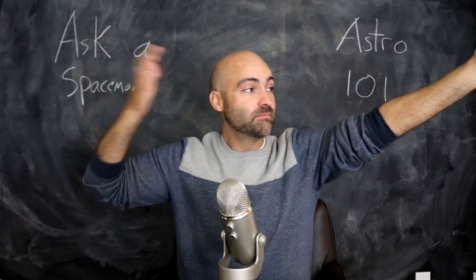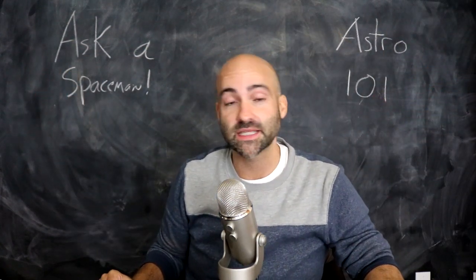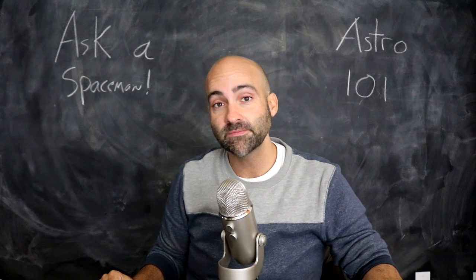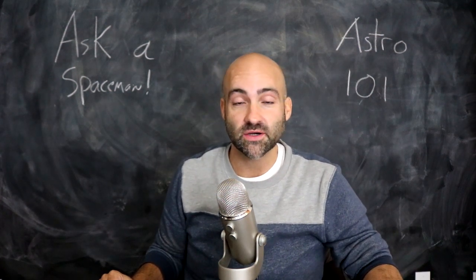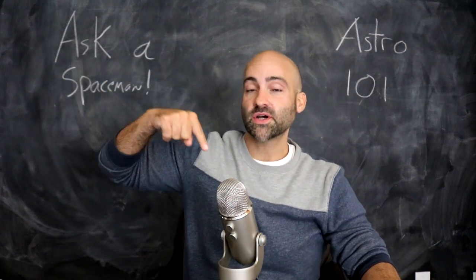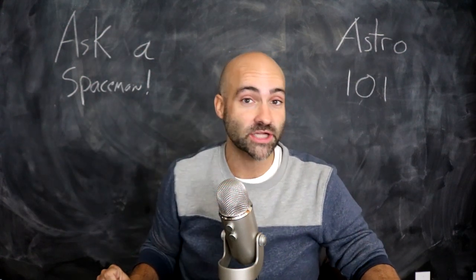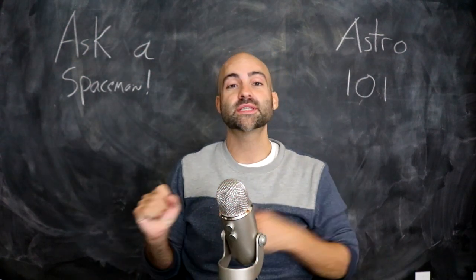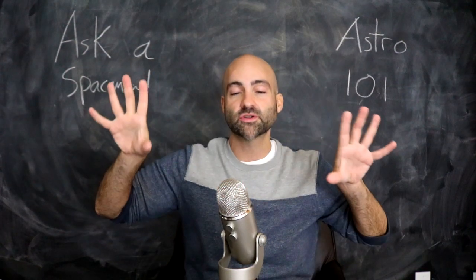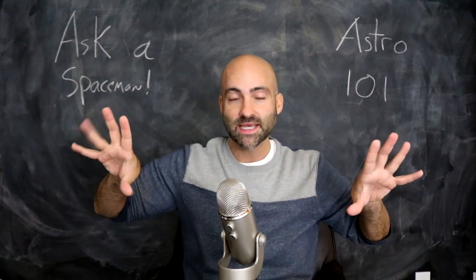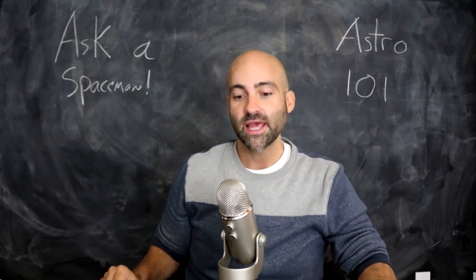A famous red giant star is Betelgeuse in the constellation Orion — it is a red supergiant. Another star in Orion is a blue supergiant: Rigel. Both of these stars are near the end of their lives, but going in different directions — one became a blue supergiant, the other a red supergiant.